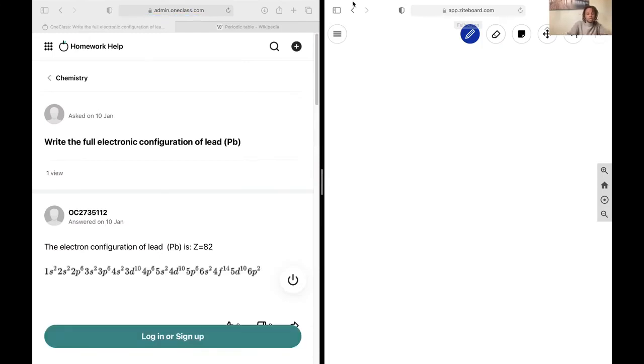Next up, we'd like the full electronic configuration of lead. So let's just remember what the electronic configuration is. The electronic configuration tells you the way electrons are organized into those orbitals that we previously discussed, and so again, remember that